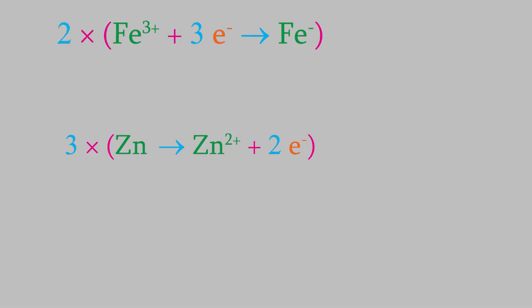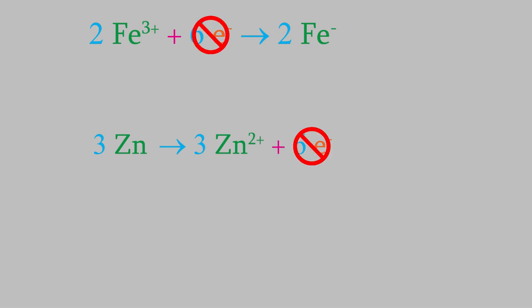That gives us 6 electrons on each side of the reaction, and those will cancel out.